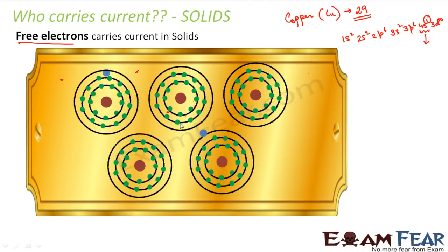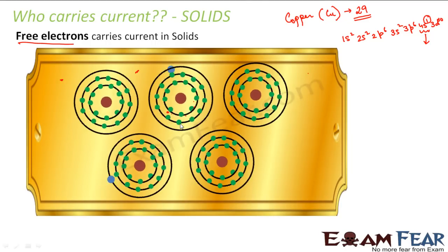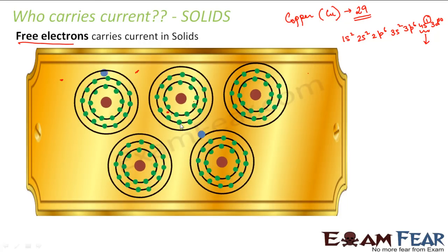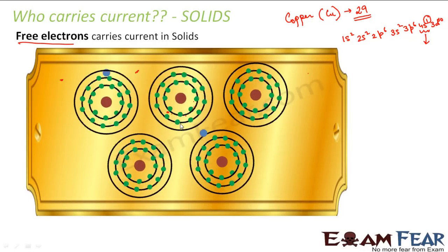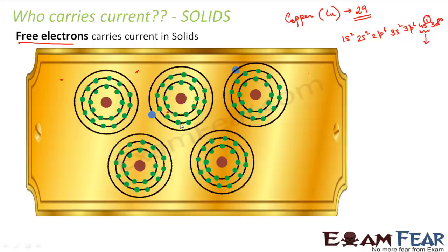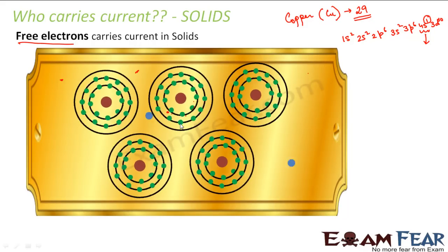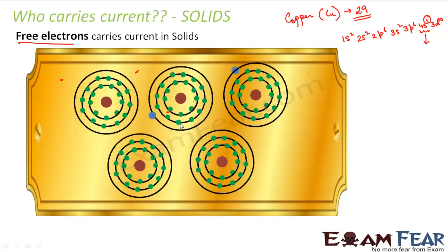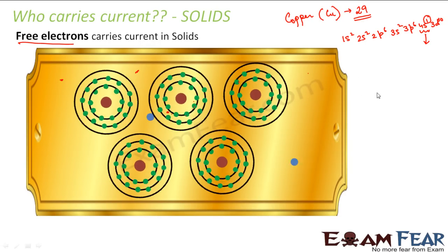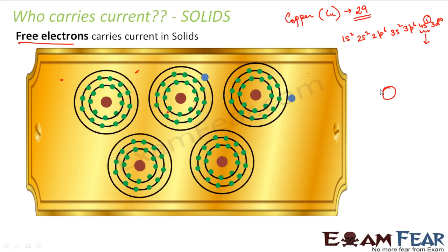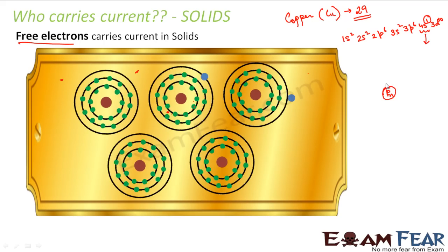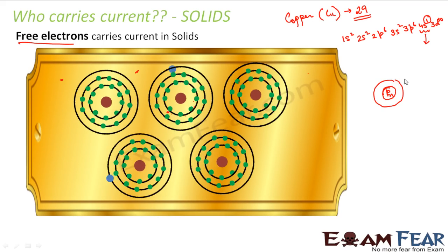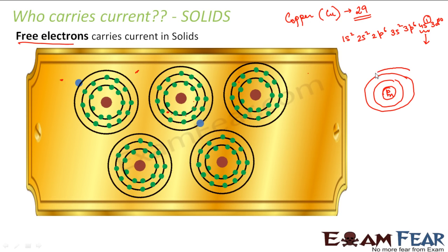When you look at this atom, when you look at this configuration, you see that there is one valence electron in the outermost shell. What happens to this valence electron? If you try to draw the atomic diagram for copper, for example, let us suppose this is the nucleus, okay this is my nucleus where you have protons and neutrons, fine, and then you have different shells like this in which different electrons are moving, correct?